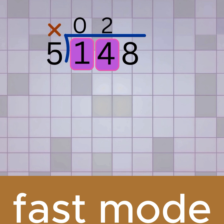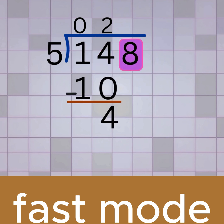Now we multiply, 2 times 5 is 10, then subtract, 14 minus 10 equals 4. Now bring down the next digit 8, and now we're working with 48. We ask,